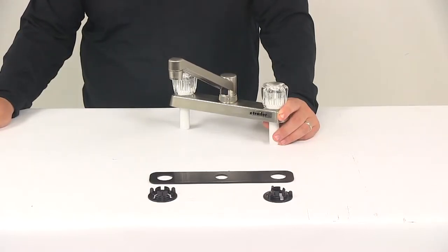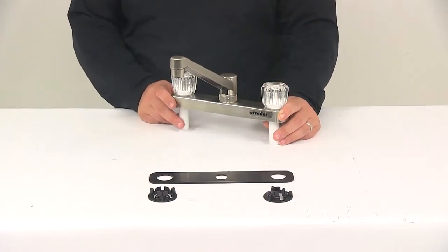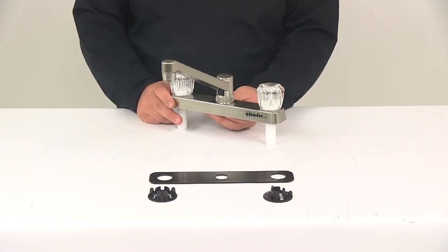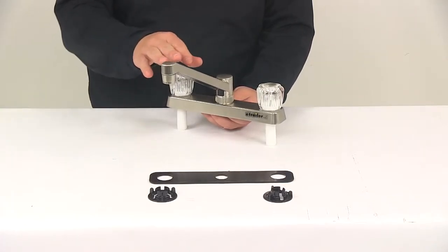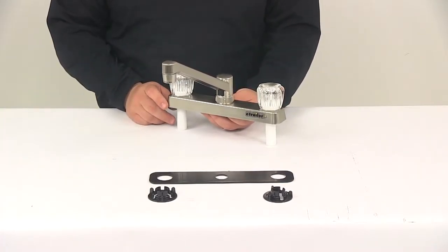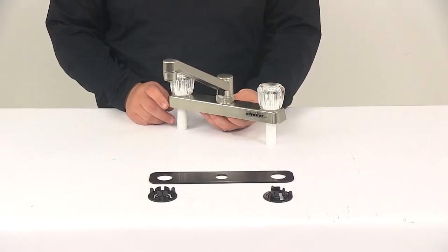Today we're going to be taking a look at the dual handle RV kitchen faucet from Ultra Faucets. This unit is made from a durable plastic construction. It features clear acrylic handles and a brushed nickel finish. The unit looks really nice and offers a very clean look.